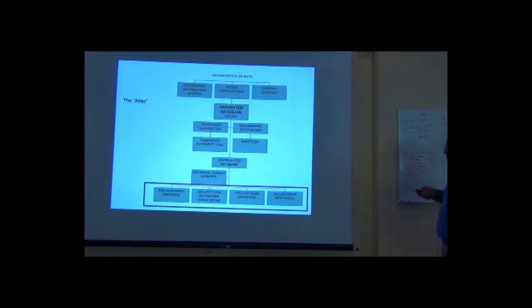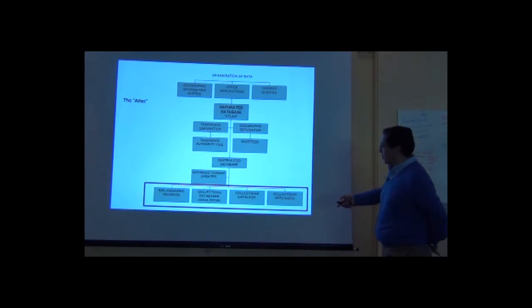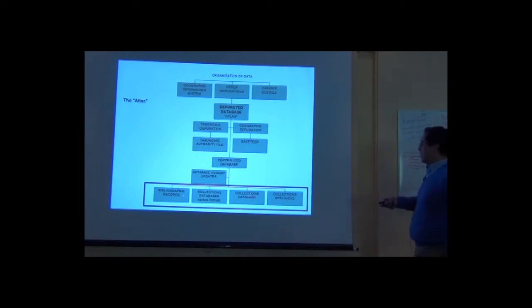So we have here kind of a flux diagram of how the database of the ATLAS was constructed. It's from down to up, because we have to start from very long below. We have several data sources. We have the bibliography. We have collection databases, that means that some of the collections that we surveyed were already being digitized.